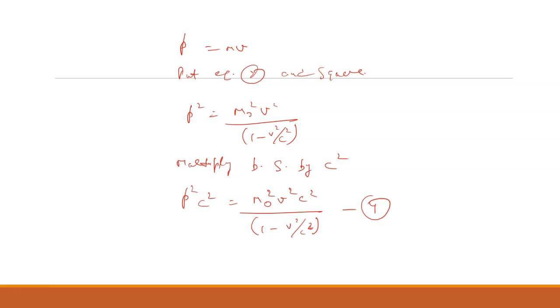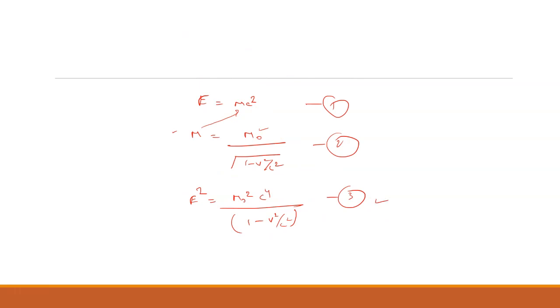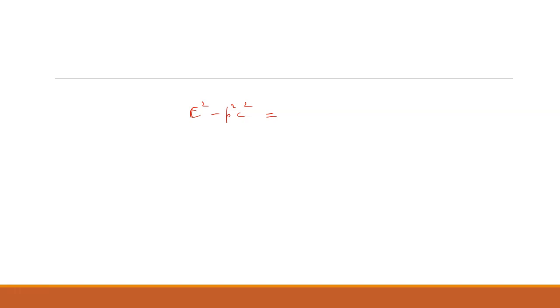Now subtract equation number four from equation number three. So it will become E squared minus p squared c squared equals m₀ squared c⁴ divided by 1 minus v²/c² minus m₀ squared v² c² divided by 1 minus v²/c².